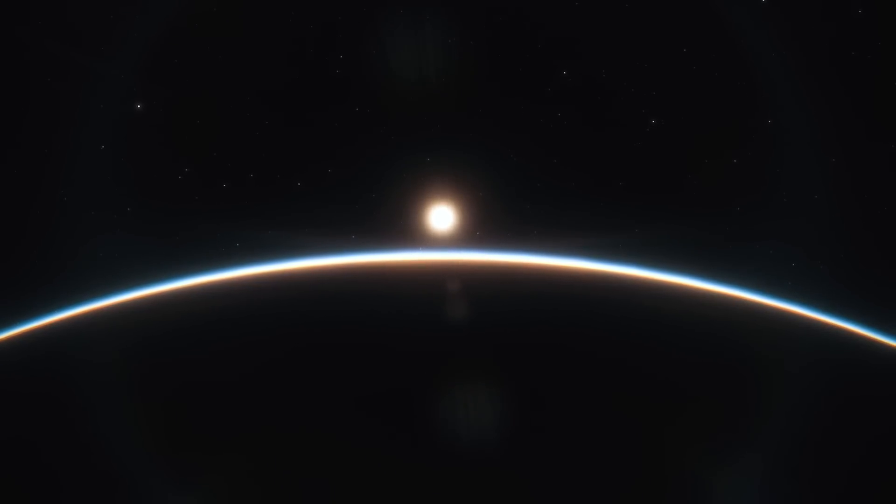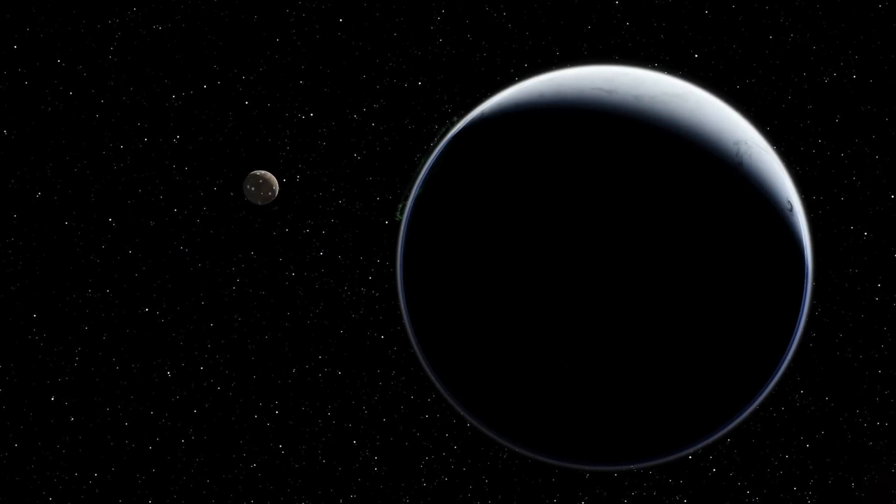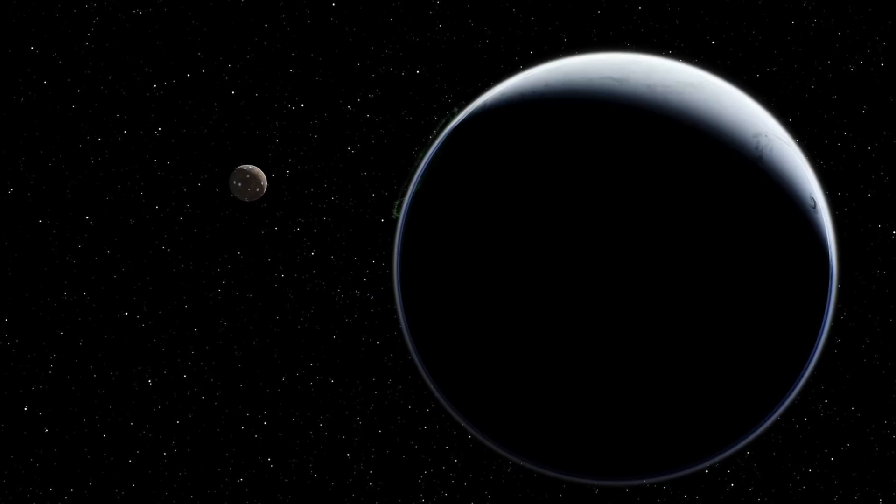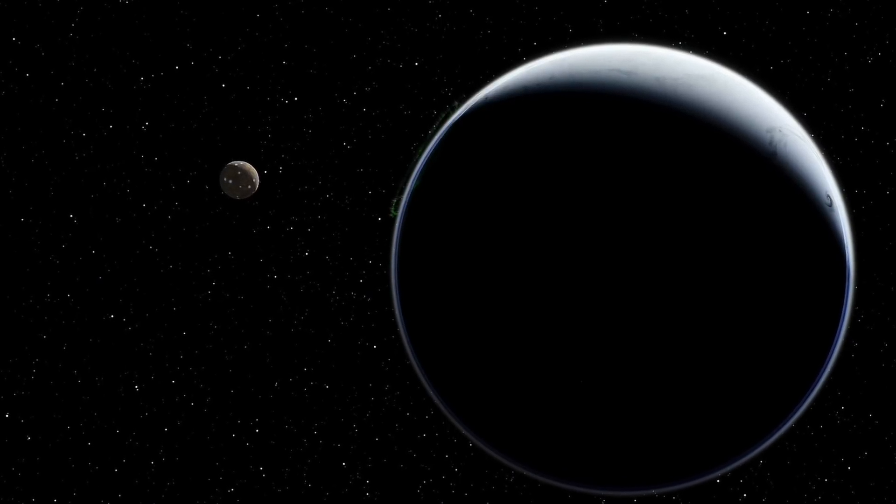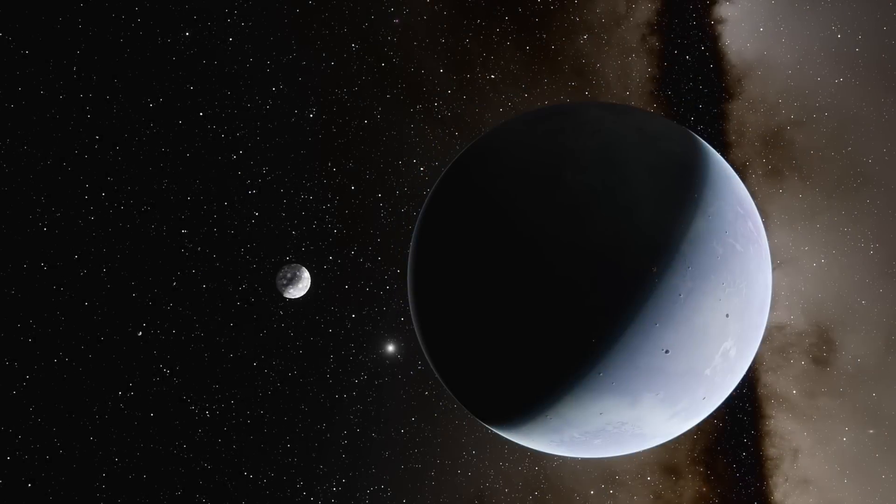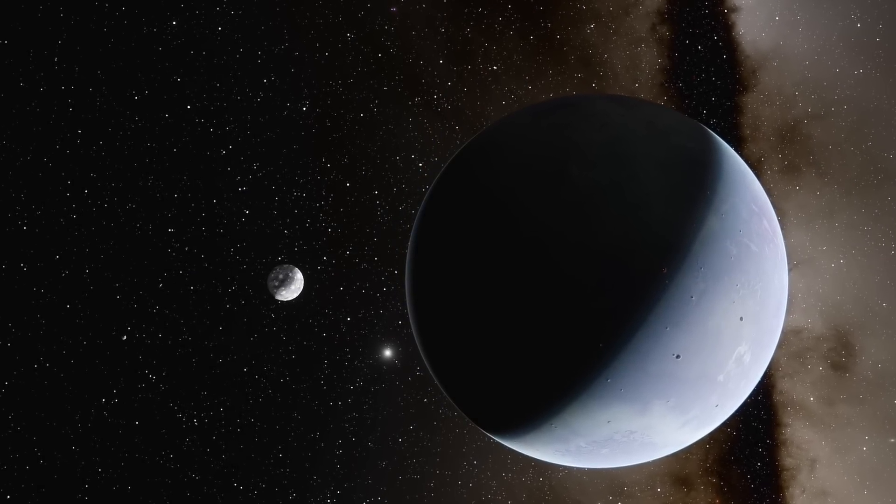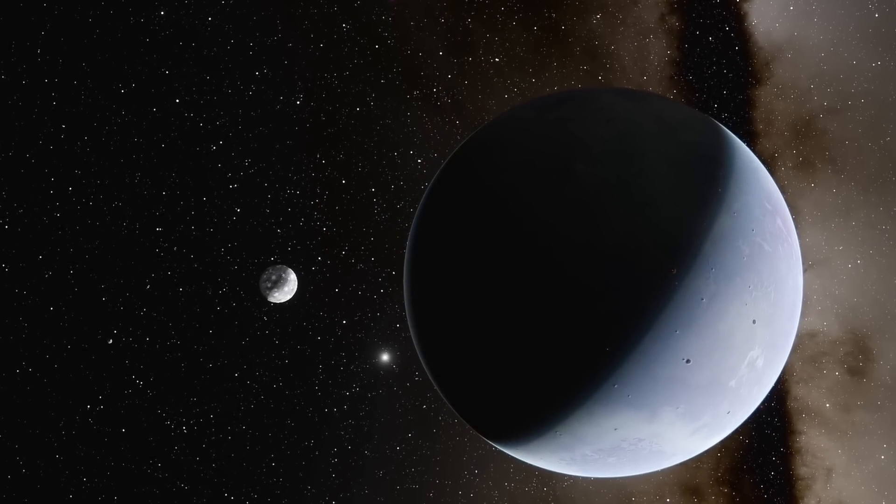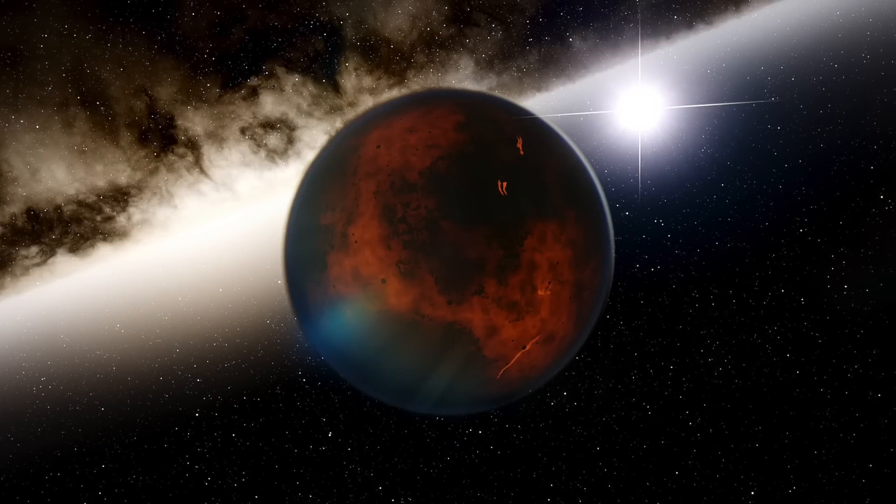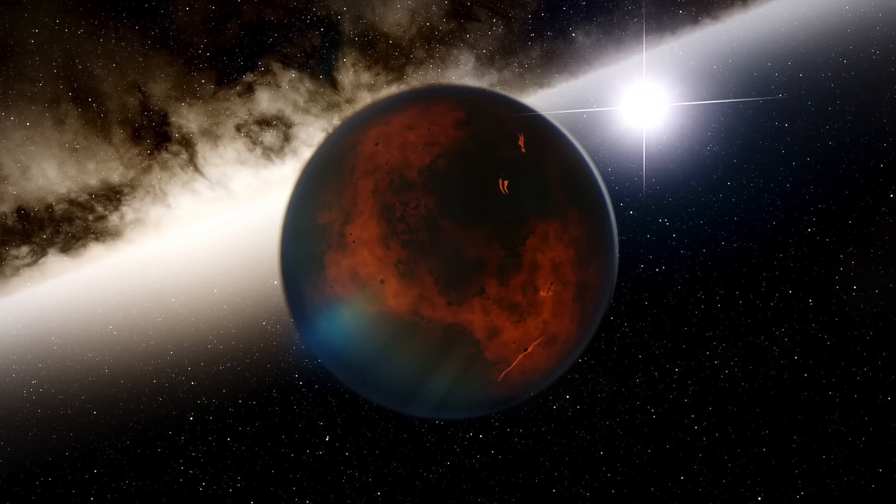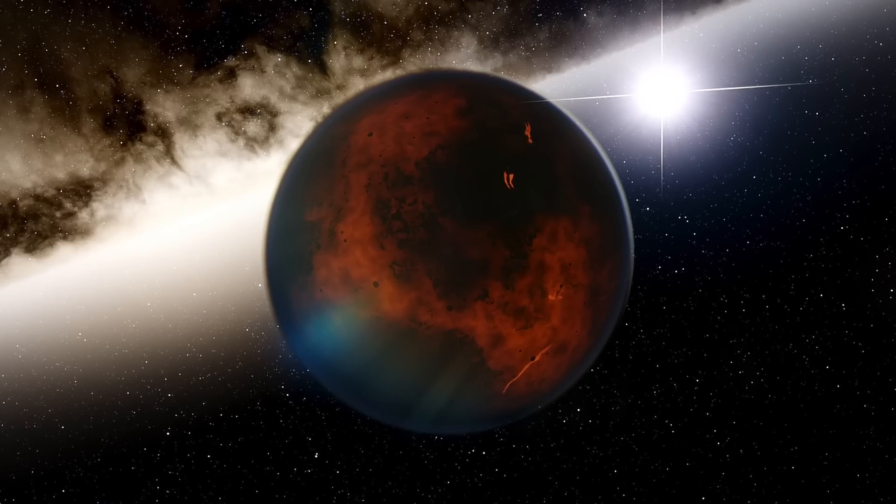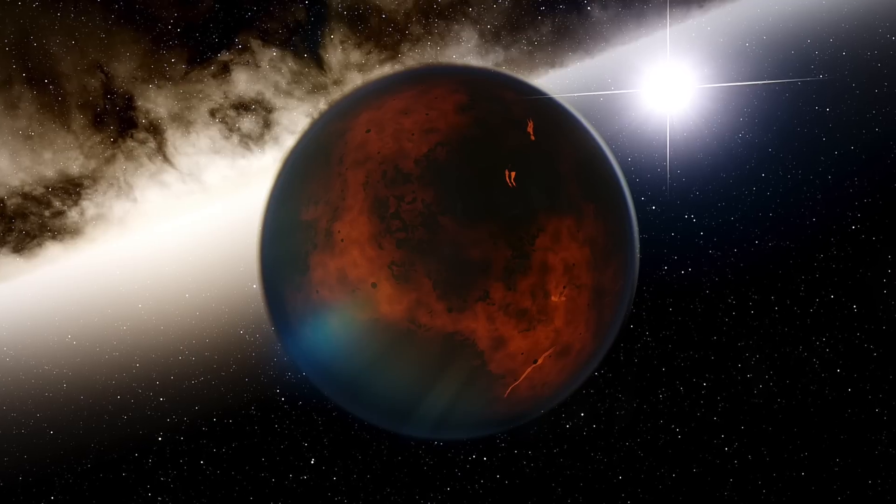One exoplanet first discovered in 2018, 2M0437B, is thought to be incredibly young as far as planets go, giving great opportunities for researchers to probe a little further into its origins. This exoplanet is estimated to be just a few million years old. By comparison, our solar system's planets are 4.5 billion years old. The young age of this exoplanet has led scientists to speculate that this is still as hot as lava, with the high surface temperature being put down to its recent formation and the energy that was released during this process.